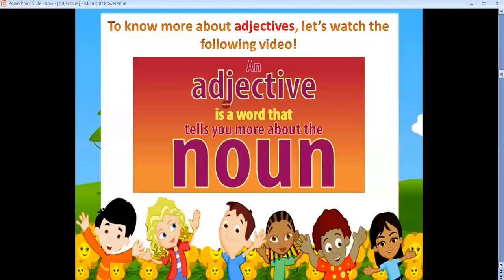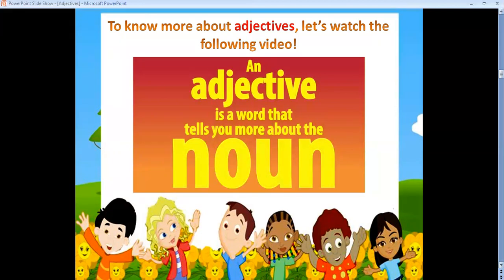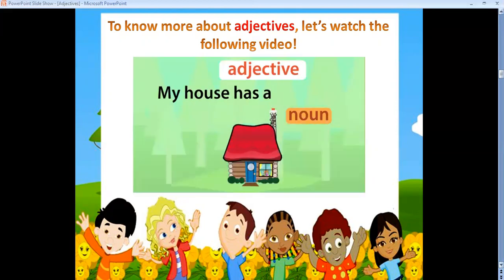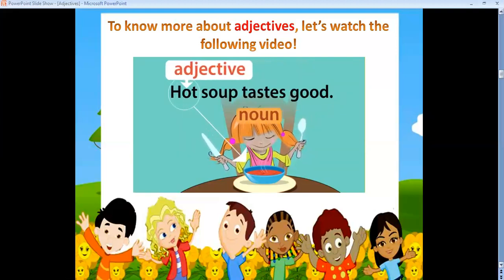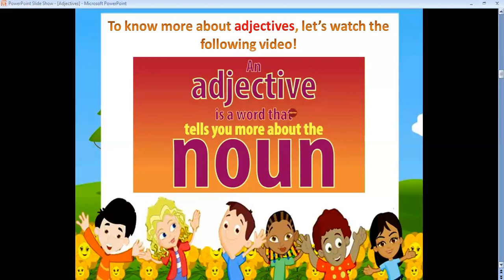An adjective is a word that tells you more about the noun. Look at that tall tree — 'tall' is the adjective that tells you the noun 'tree' is tall. My house has a red roof — 'red' is the adjective that tells you the noun 'roof' is red. Hot soup tastes good — 'hot' is the adjective that tells you the noun 'soup' is hot.